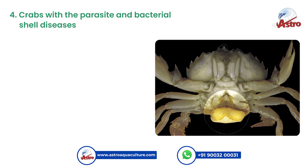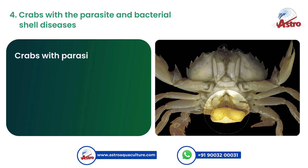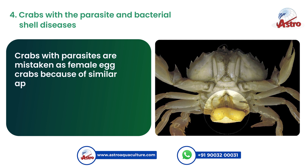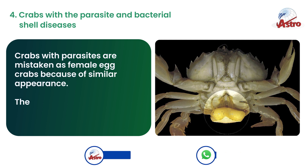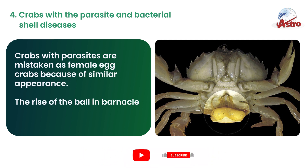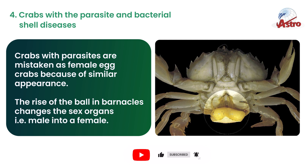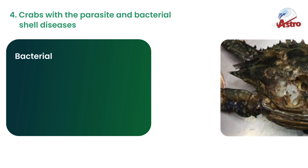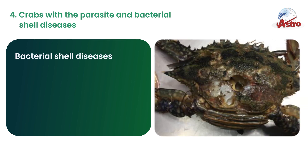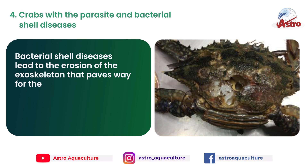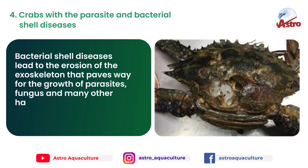Fourth, crabs with parasites and bacterial shell diseases. Crabs with parasites are mistaken for female egg crabs because of similar appearance. The rise of the ball in barnacles changes the sex organs, turning male into female. Bacterial shell diseases lead to erosion of the exoskeleton, paving the way for the growth of parasites, fungus, and many other harmful pathogens.